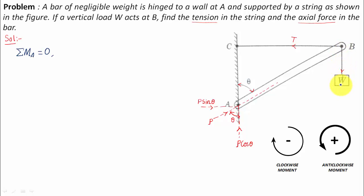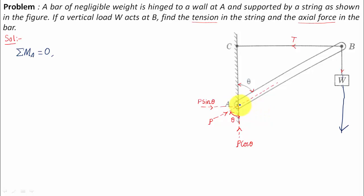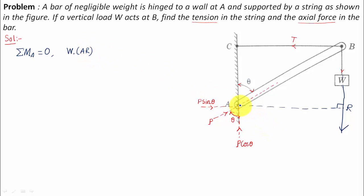Starting with force W — this is its line of action. If we drop a perpendicular from point A to the line of action of W, that perpendicular distance is AR, where R is the foot of the perpendicular. Using the right-hand rule, this force W produces a clockwise moment, so we assign it a negative sign: negative W times AR.